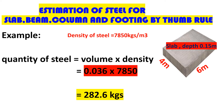So 282.6 kg is the quantity of steel needed for a slab that is 6 meters long, 4 meters wide, and 0.15 meters deep. When you want to proceed for the beam, column, or footing, you use the same procedure: get the volume of concrete, apply the appropriate percentage to get the volume of steel, then multiply by the density to get the quantity of steel.